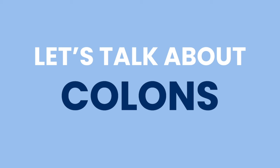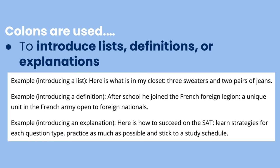Moving on, we can now talk about colons. A colon is used to introduce lists, definitions, or explanations. For example: 'Here's what's in my closet: three sweaters and two pairs of jeans' — that's introducing a list. The second example introduces a definition by placing a colon after 'the French Foreign League' and then explaining what it is. And the final example uses a colon to introduce an explanation: 'Here's how to succeed on the SAT:' followed by the explanation.